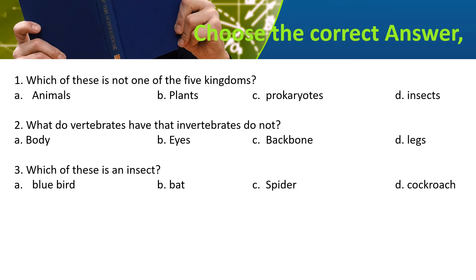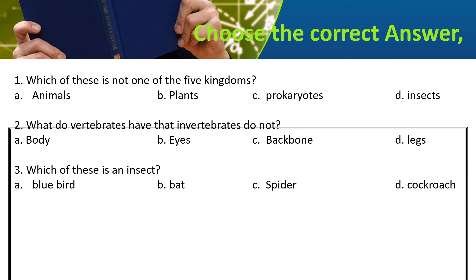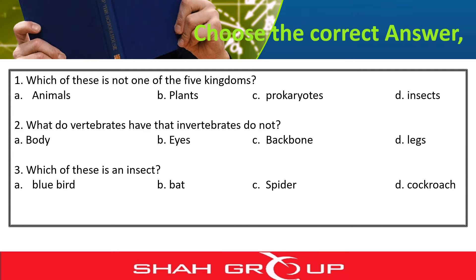You have to know: what do vertebrates have that invertebrates do not? Next question: which of these is an insect? Options are blue bird, bat, spider, or cockroach.